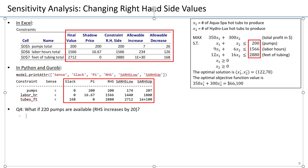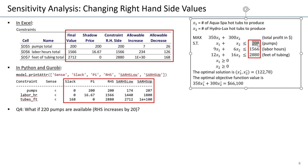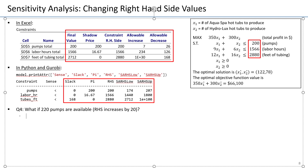But now we are going to consider what happens when we go beyond the range of feasibility. Consider this question: what if 220 pumps are available? So the right-hand side of the pump's constraint is increased by 20. If you look at the sensitivity report of Gurobi, 220 is outside the range of feasibility, which is 174 to 207. 220 is above 207.